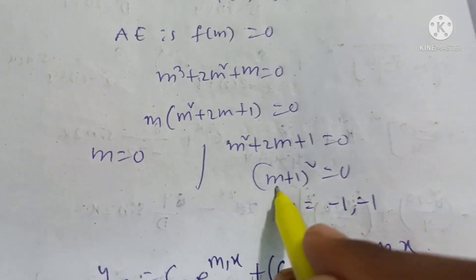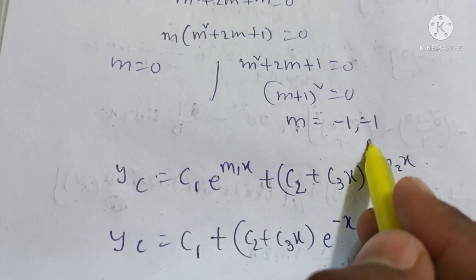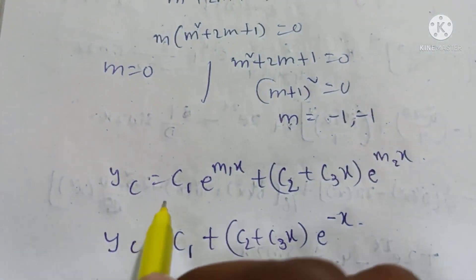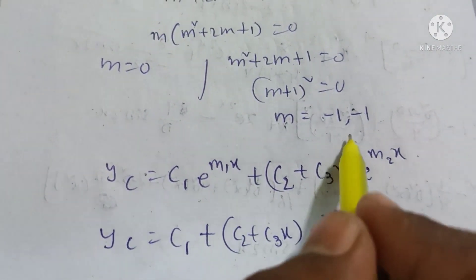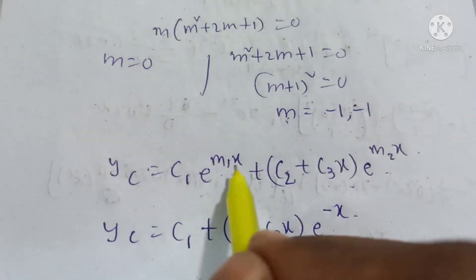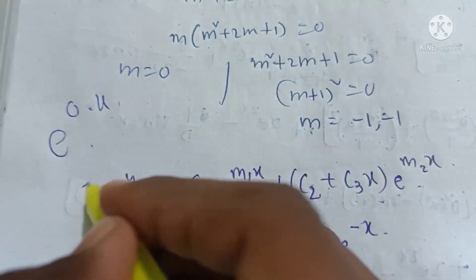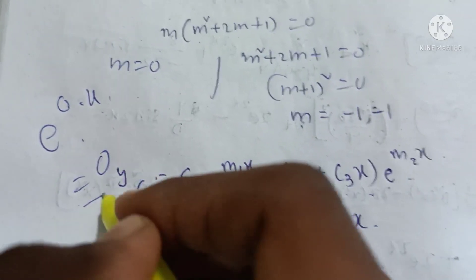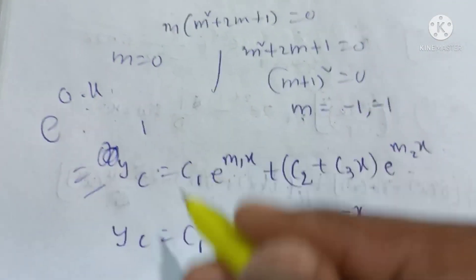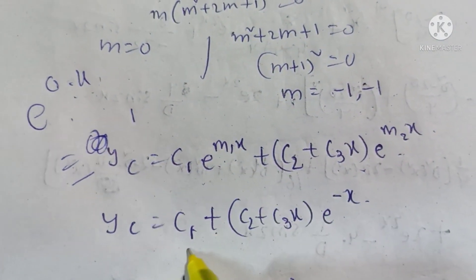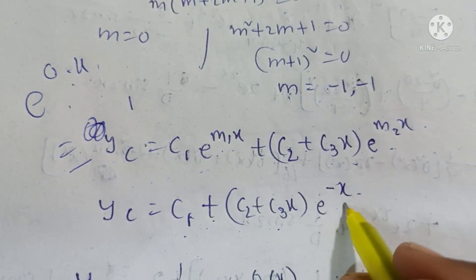Factoring further: m(m + 1)² = 0, giving roots m = 0, m = -1, -1 (repeated). The complementary function is yc = c₁e^(0·x) + (c₂ + c₃x)e^(-x). Since e^(0·x) = 1, yc = c₁ + (c₂ + c₃x)e^(-x).